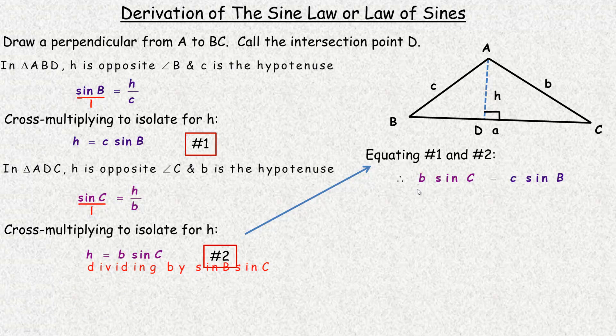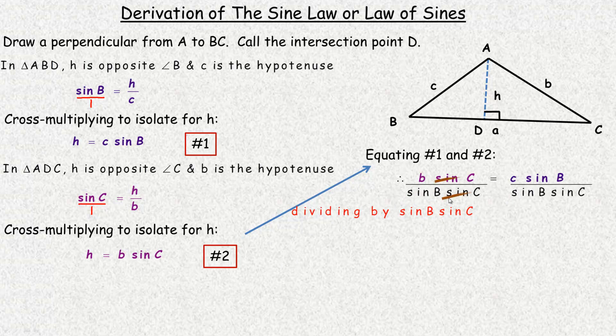So what we're going to do to get what the sine law normally looks like, we could actually call this the sine law, but it's in a more usable form if we do this next step. We're going to divide both sides by the sine of B times the sine of C. Over here on the left, the sine C's will divide out. And over here on the right, the sine B's will divide out. So what we're left with is b over sine B equals c over sine C.